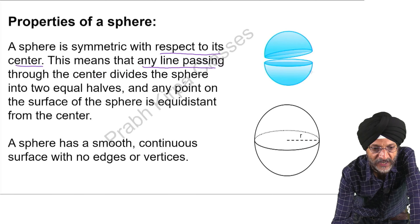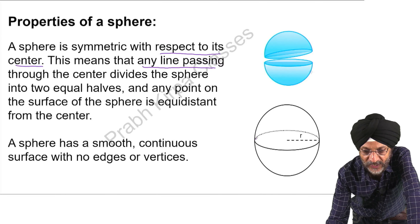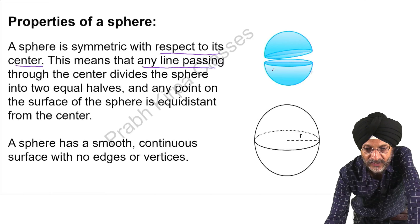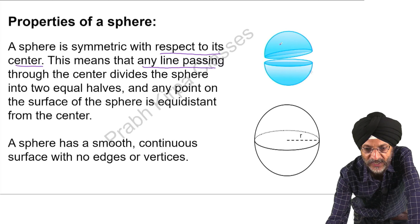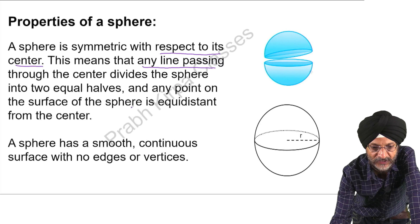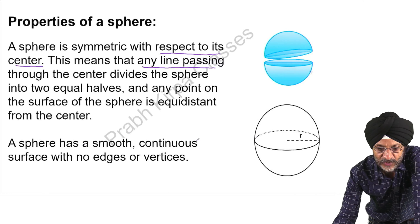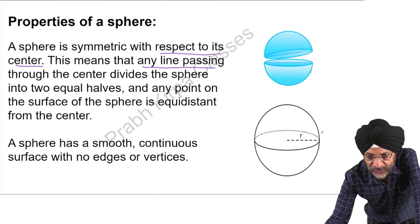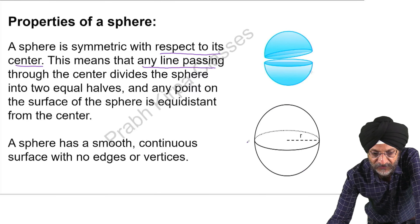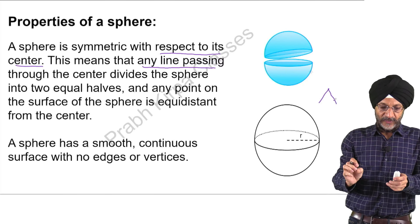The distance between the centre — this is the centre point — and any point on the surface of the sphere, you can see these are the outer points. From this point to this point, or this point to this point, the distance is the same. This constant distance is known as the radius of the sphere. If we join this line to this point, this will also be known as the radius of the sphere.